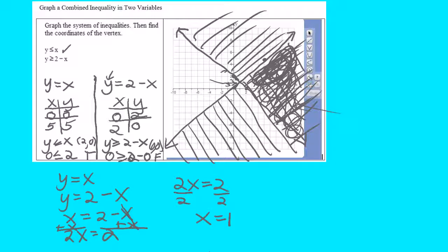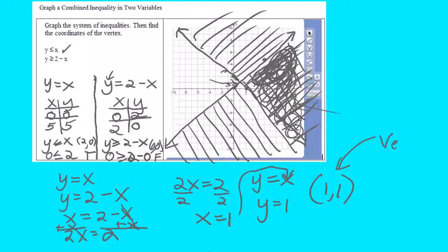Now I'm taking x equals 1 up to either one of these equations. How about y equals x? That'll be the easiest. If x is 1, then I'll take that 1 and put it in for x, and I'll get y equals 1. So our point of intersection is the point 1, 1. And of course that point of intersection is called the vertex.